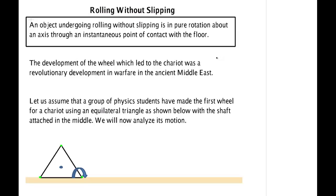In this video we're going to talk about a very interesting phenomenon, rolling, and in particular rolling without slipping, which means that the object will not slide while it rolls. The key thing to know about rolling without slipping is that an object undergoing this is in pure rotation about an axis through an instantaneous point of contact with the floor.